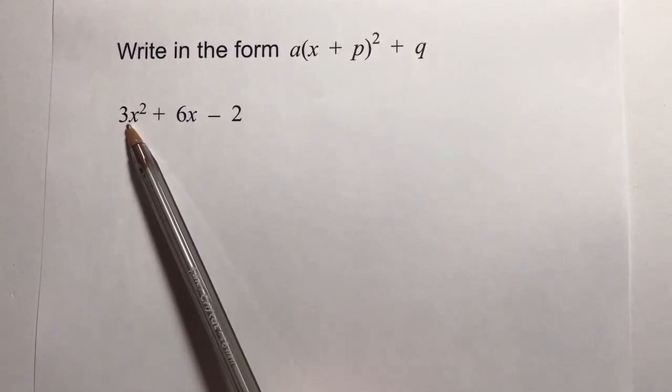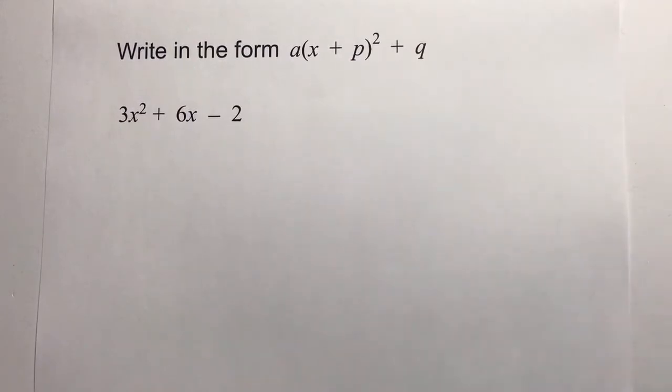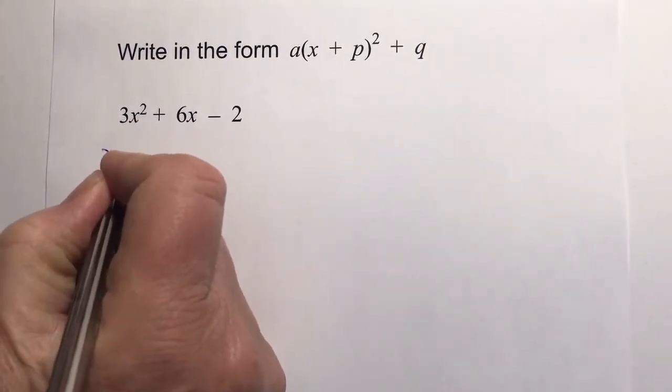I'm going to show you a technique of how to complete the square and put this into this particular form. The first thing we do is look at the first two terms, and then factor them for the value of 3.